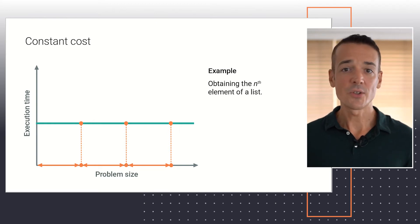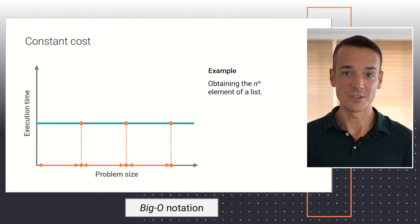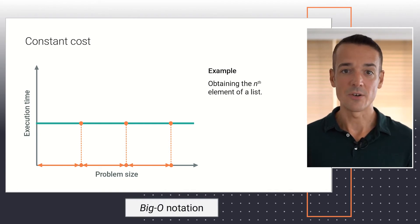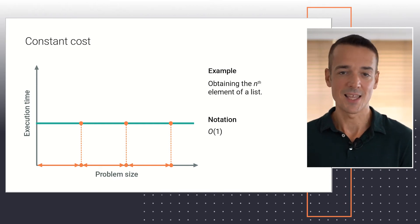Here, I'll also introduce a formal notation commonly used as a shorthand way of referring to the computational cost of an algorithm, called the big O notation, represented with capital letter O, followed by a mathematical expression in parentheses. In this case, a constant computational cost is alternatively referred to as big O of 1. Using this in a sentence, we could say that the cost of accessing the nth element of a list is constant or big O of 1.